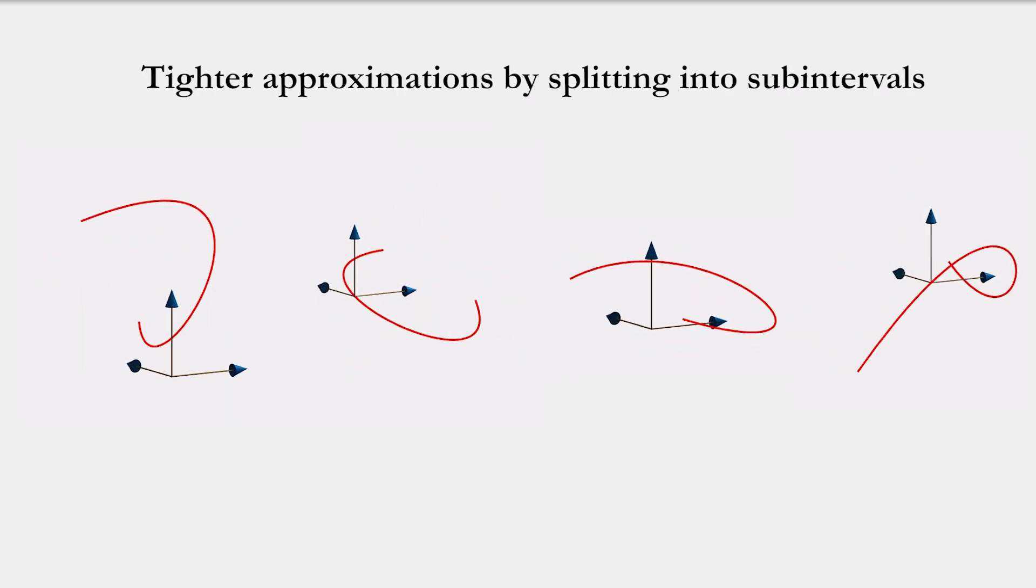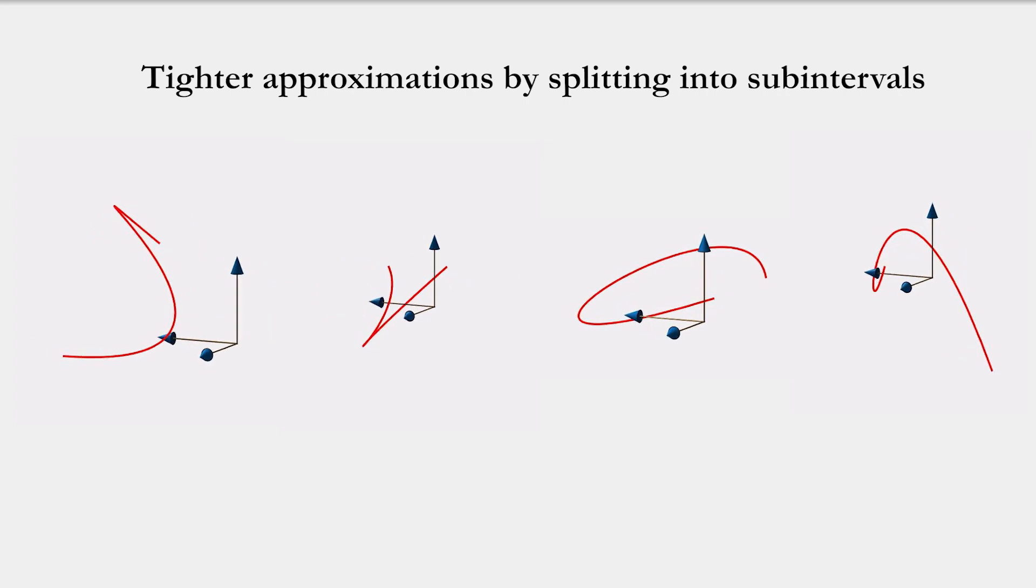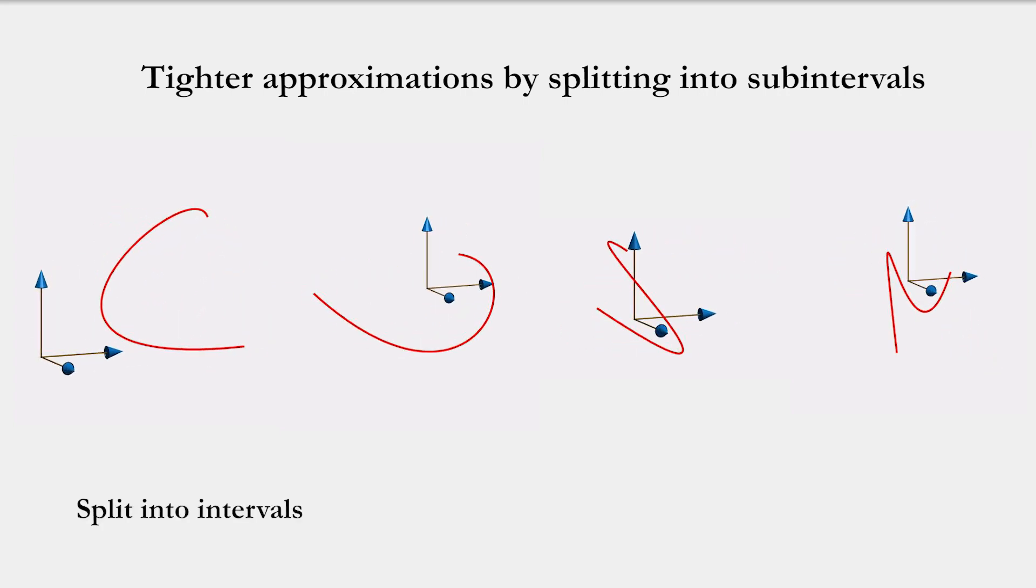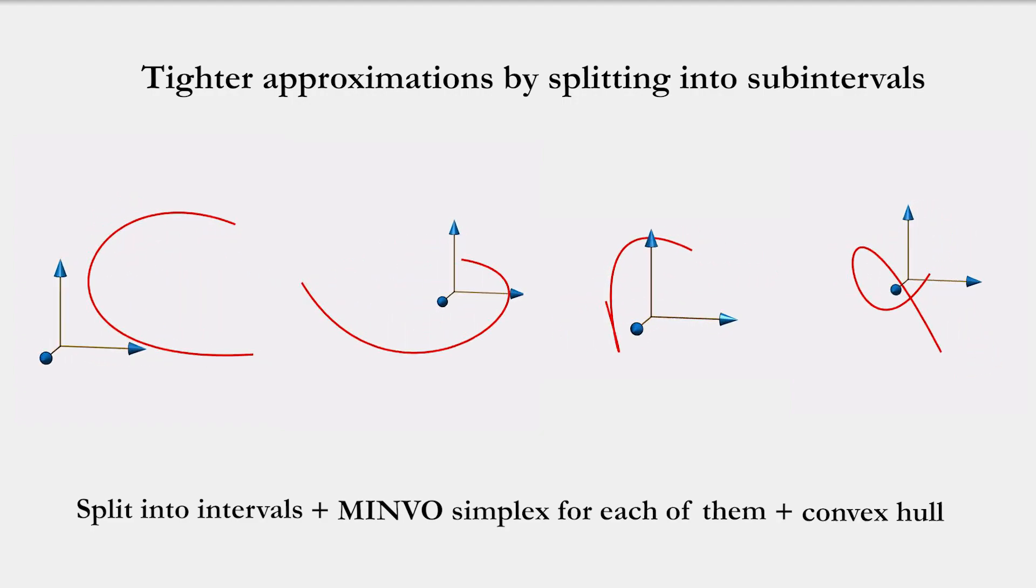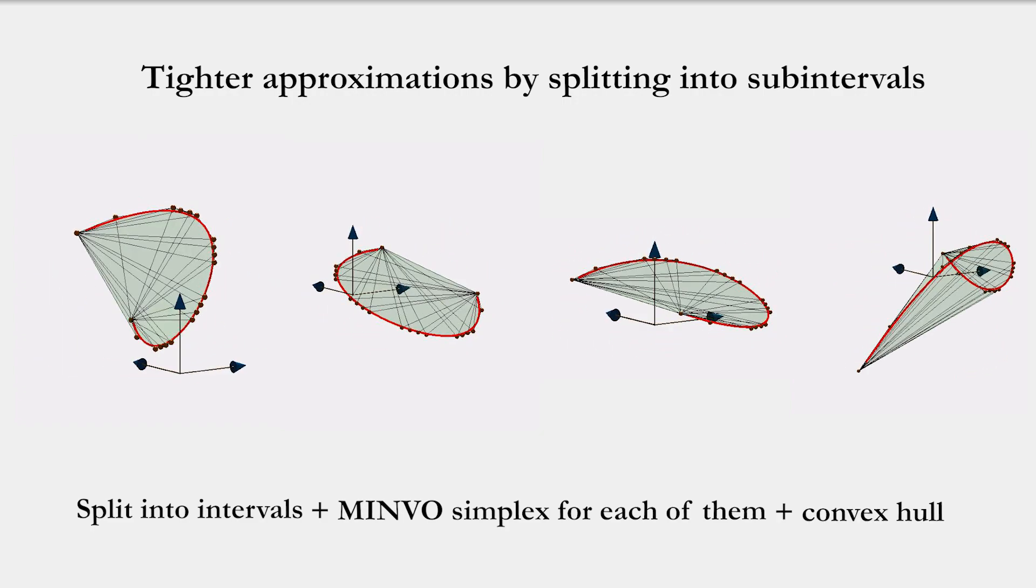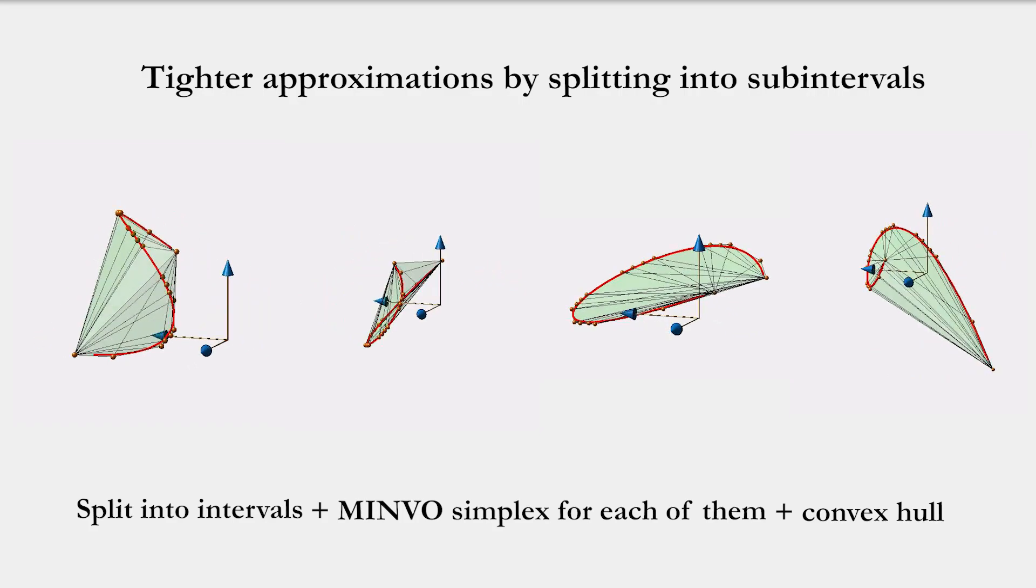Finally, we can obtain tighter polyhedral representations of a given curve as follows. First we split the curve into intervals, then we compute the smallest Minvo simplex for each interval, and finally we compute the convex hull of all of them. These are the polyhedral outer representations of n.